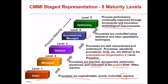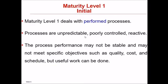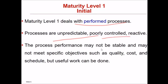You can remember the five levels with the mnemonic IMD QO — Initial, Managed, Defined, Quantitatively Managed, Optimizing. Starting with maturity level one, Initial: processes are unpredictable, poorly controlled, and reactive. Process performance may not be stable and may not meet specific objectives such as quality, cost, and schedule.